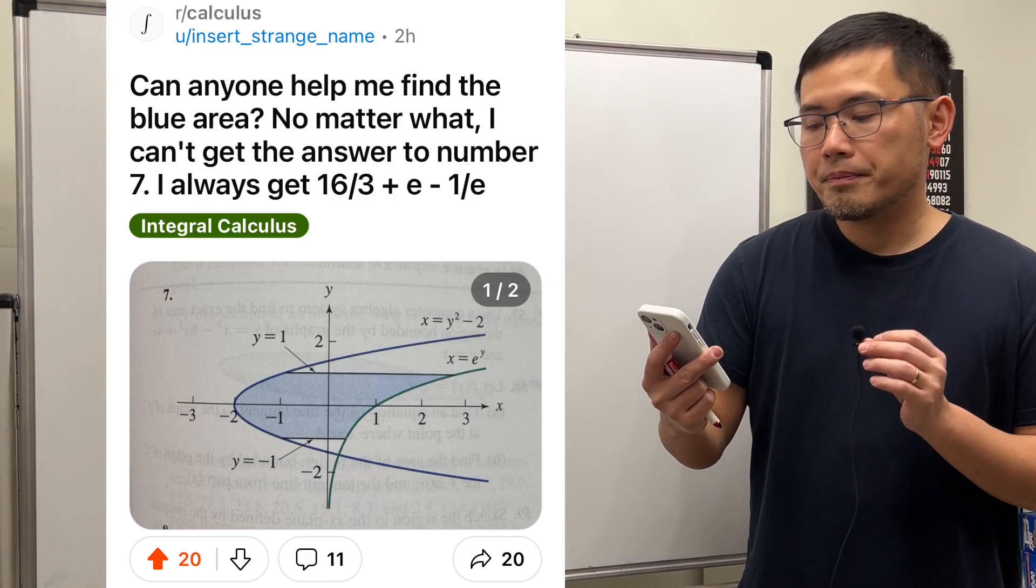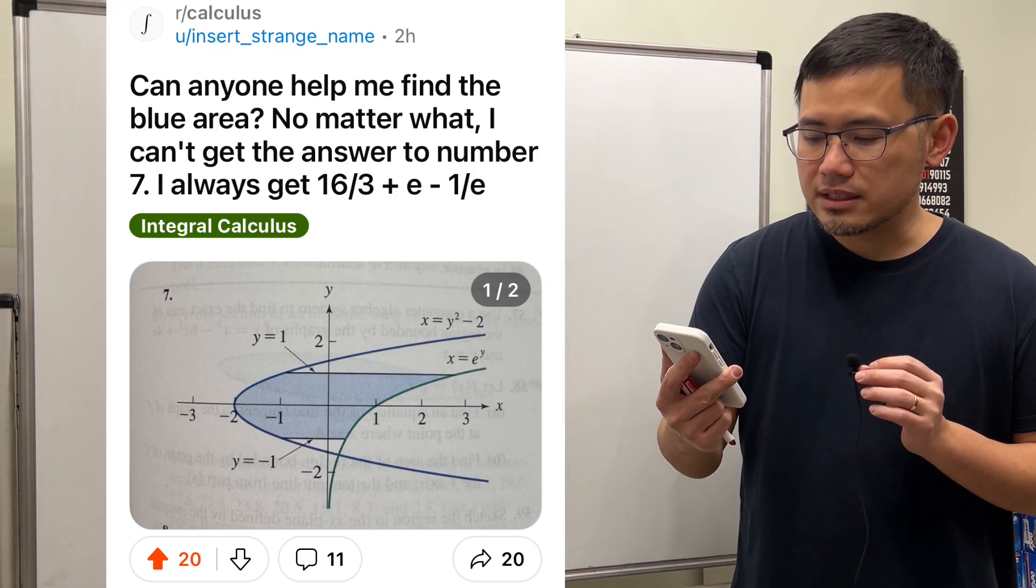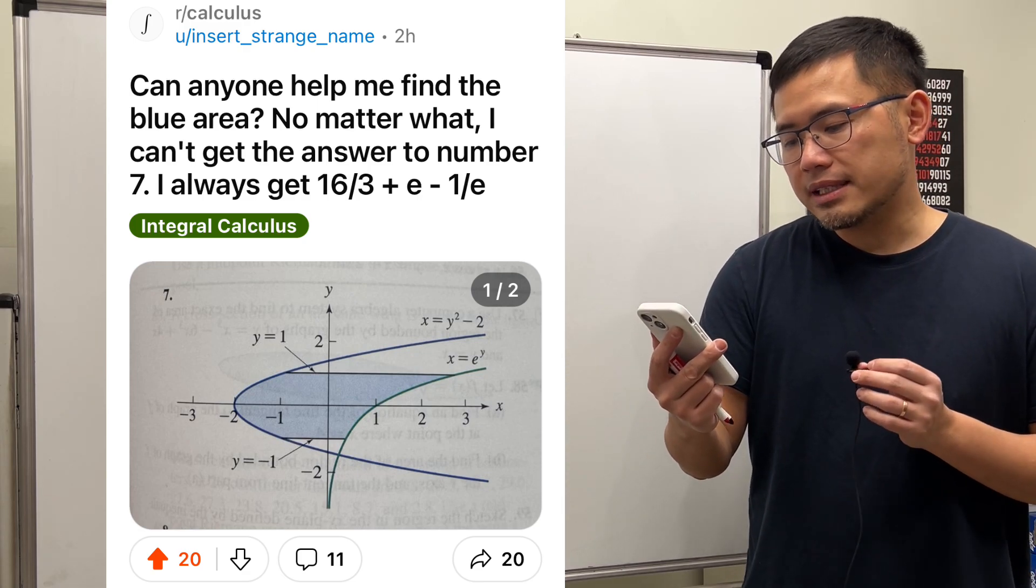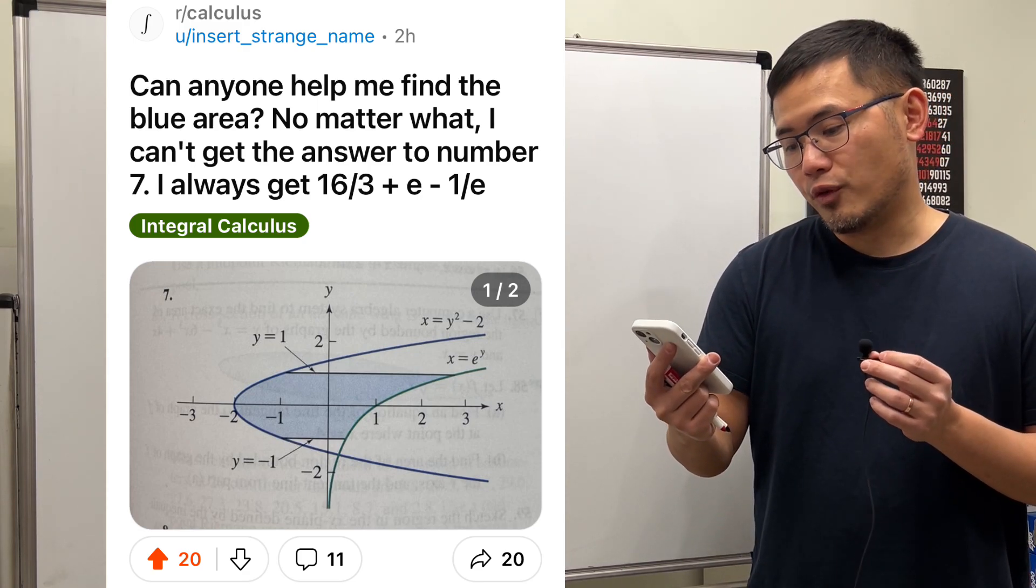Can anyone help me find the blue area? No matter what, I cannot get the answer to number 7. I always get 16 over 3 plus e minus 1 over e.